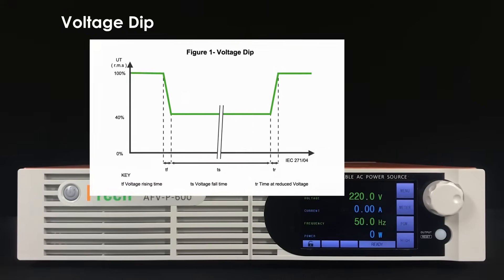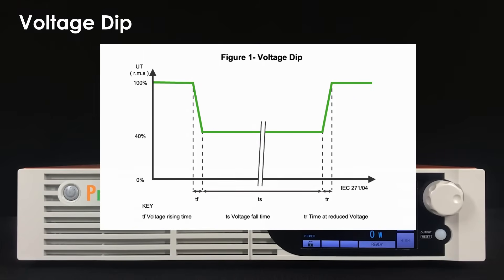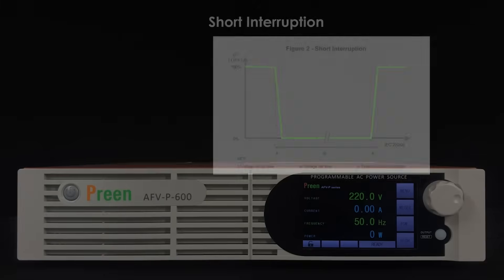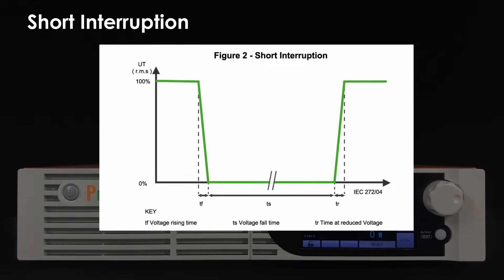A voltage dip indicates a sudden reduction of the voltage at a particular point of an electricity supply system below a specified dip threshold, followed by its restoration after a brief interval. A short interruption indicates a sudden reduction of the voltage on all phases at a particular point of an electrical supply system below a specified interruption threshold, followed by its restoration after a brief interval.